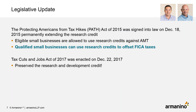With the PATH Act signed into law at the end of 2015, it permanently extended the research credit. This was a very good thing because in the past it had always been an expiring credit — Congress would have to extend it every few years, which made tax planning very difficult. Now it's a permanent addition to the code. Also included in the PATH Act: eligible small businesses — those with less than $50 million in gross receipts — can use research credits against AMT. And qualified small businesses can use research credits to offset their employer payroll taxes.